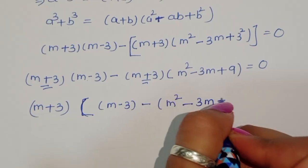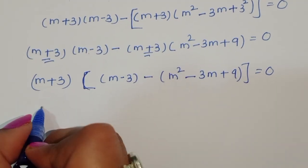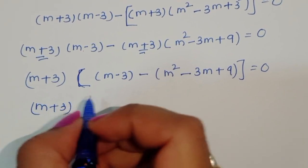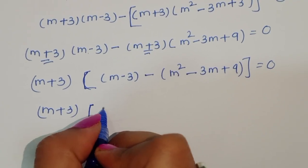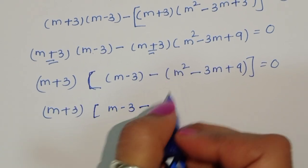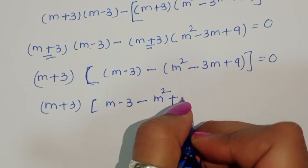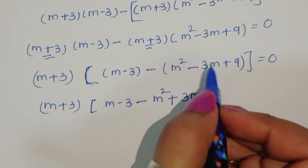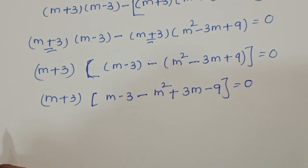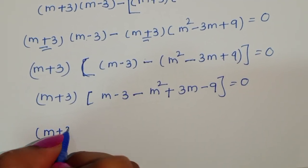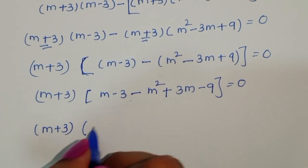So we write: (m plus 3) times (m minus 3) minus (m squared minus 3m plus 9) equals 0. Opening the bracket, with the minus sign distributing: m minus 3 minus m squared plus 3m minus 9 equals 0.